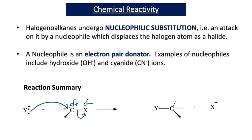When the carbon-halogen bond breaks, we represent this with movement of two electrons onto the halogen atom. I draw a double-headed arrow from the middle of the carbon-halogen bond to the halogen atom. The halogen atom is represented by the symbol X. When the carbon-halogen bond breaks, a pair of electrons moves onto the halogen atom to form a halide ion, X⁻.